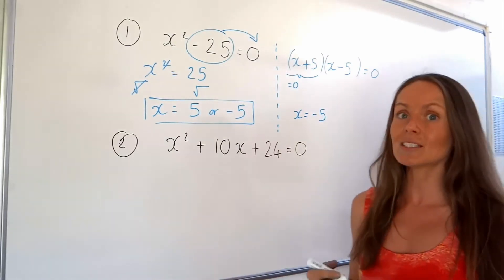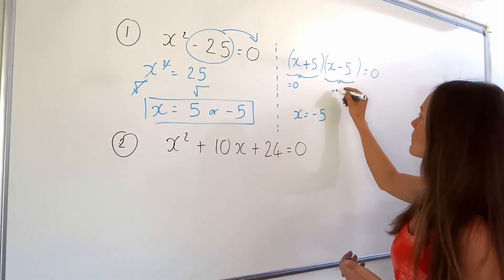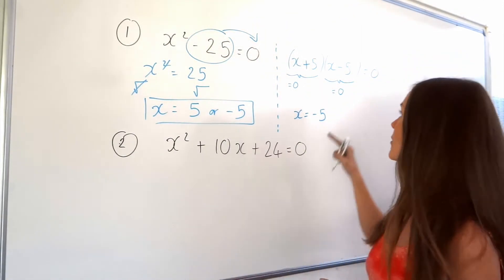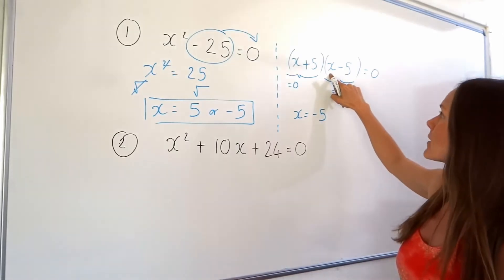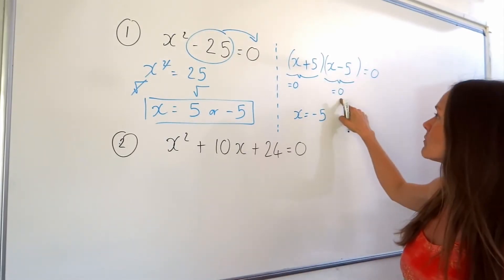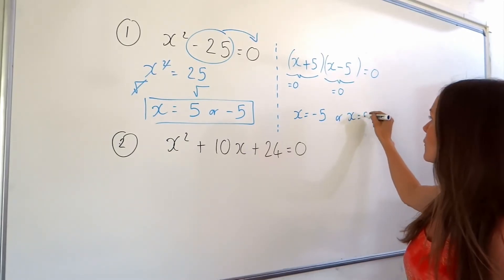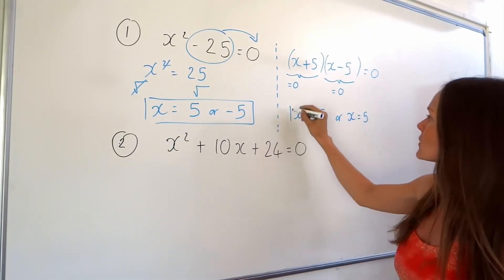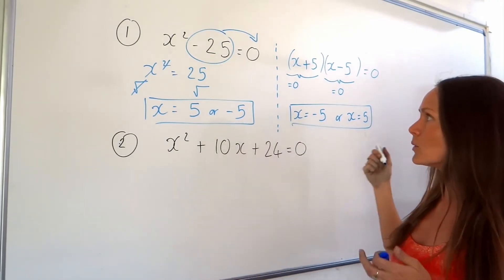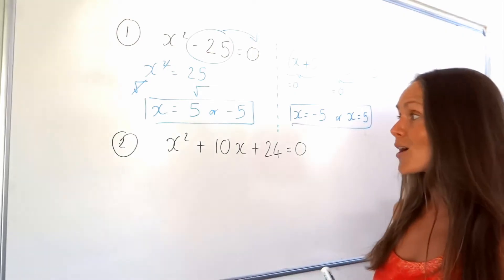Then we look at the other bracket and pretend that this bracket is 0. So if this bracket equals 0, the value of x must be positive 5, because 5 minus 5 is 0 — so that gives me my second value of x. You can see I've got the same answer with both methods, and either one is fine. On to number 2.